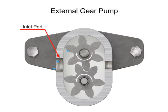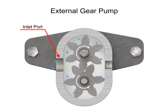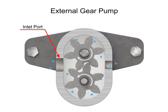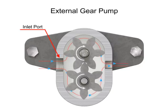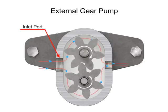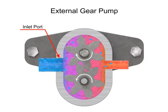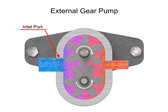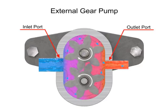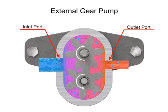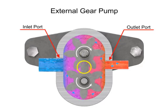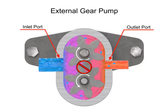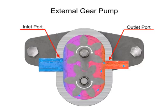Fluid flows into the cavities and is trapped by the gear teeth. As the gears rotate, a flow path is created around the outside of each one. Fluid trapped in the slots between teeth is carried around and discharged into the cavity with the outlet port. Meshing of the teeth in the center of the pump seals the outlet port from the inlet port. No fluid passes between the gears.